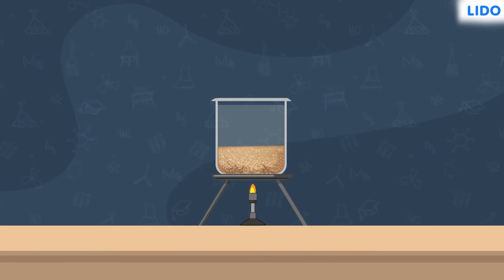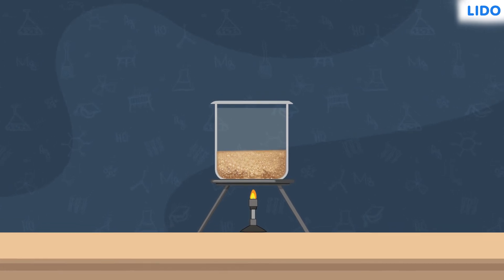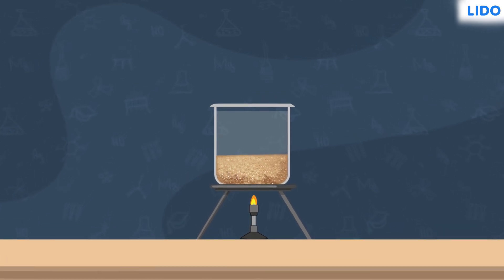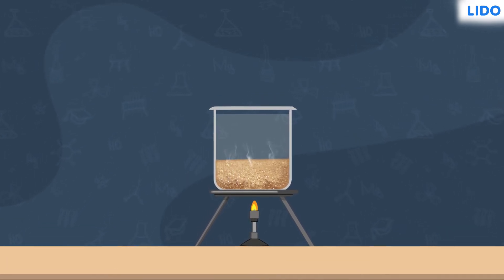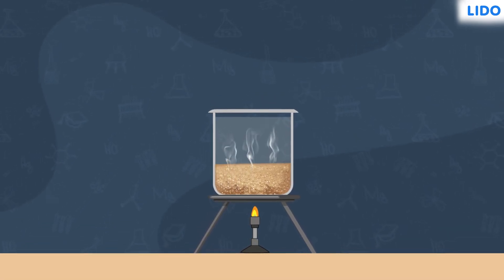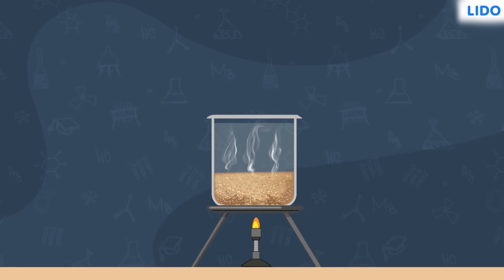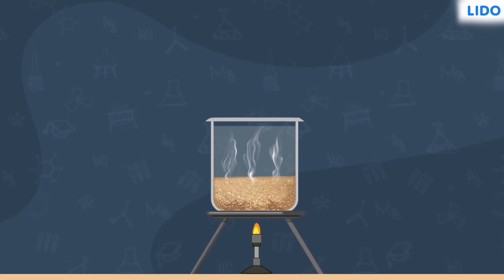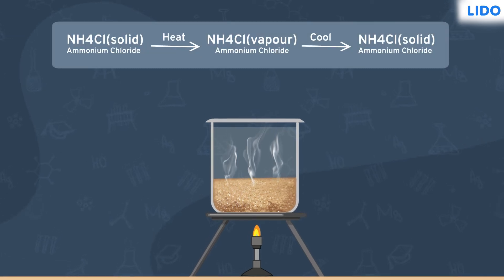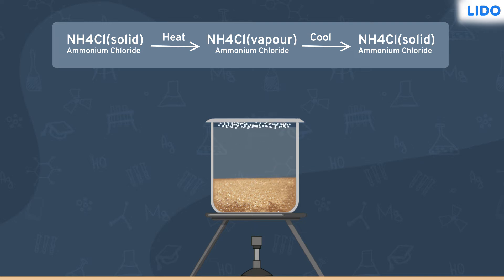So from a mixture containing camphor, common salt and sand, camphor can be easily separated first by the process of sublimation. On heating, camphor converts into vapour leaving behind the non-volatile components. On cooling, the vapour of camphor changes into solid.